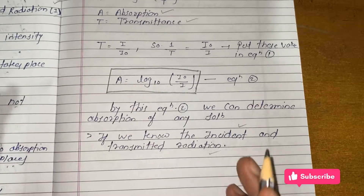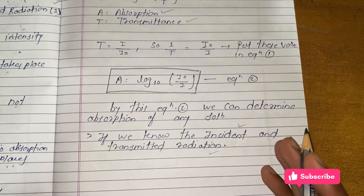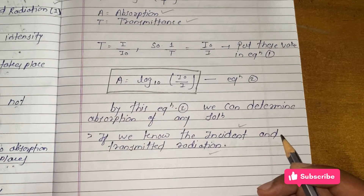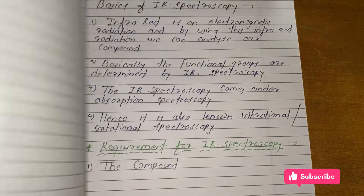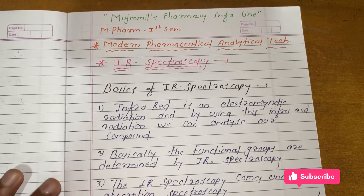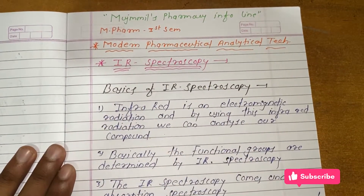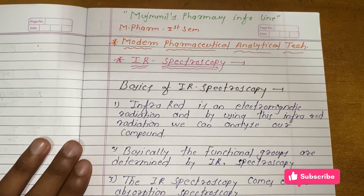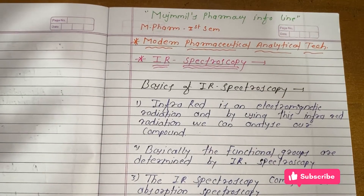I hope you got the idea about the laws of UV spectroscopy — Lambert's Law and Beer's Law. If you want a detailed lecture on electronic transitions in UV spectroscopy, please comment below. In the next lesson we are going to start a new series on IR spectroscopy. Thank you for watching — don't forget to subscribe to our YouTube channel and stay connected for new updates. Thank you.